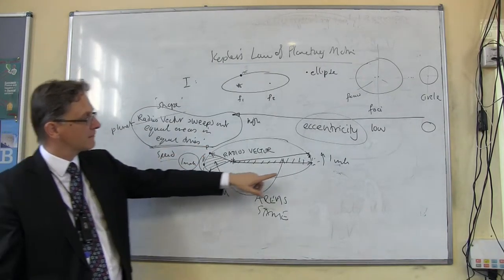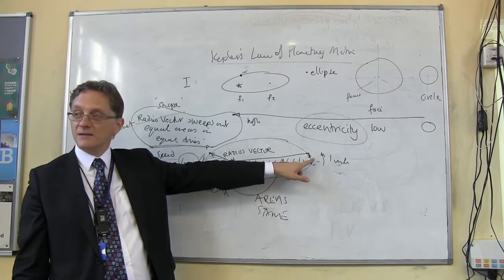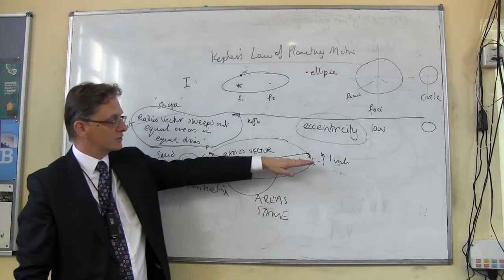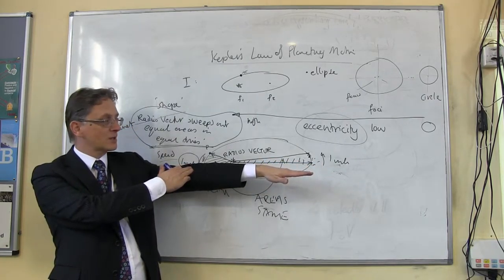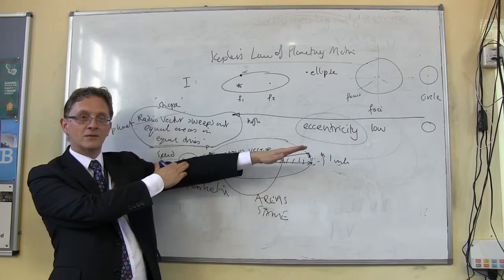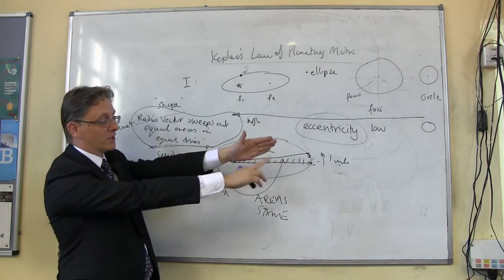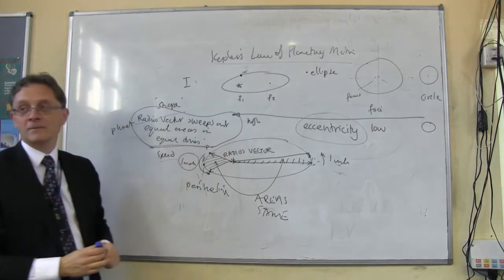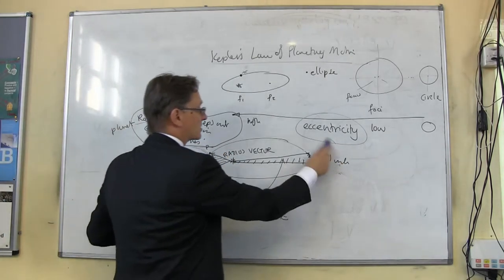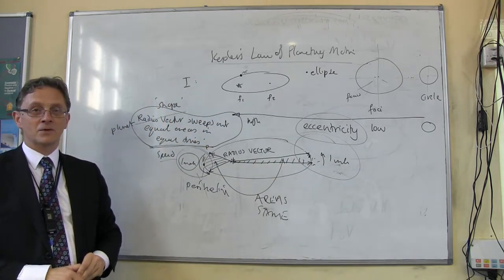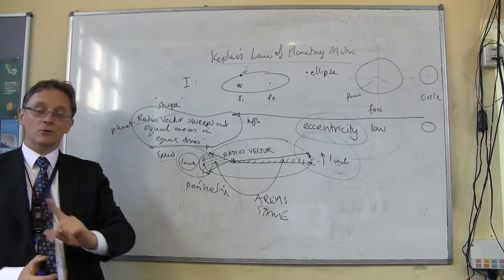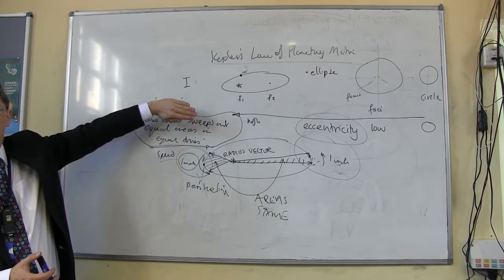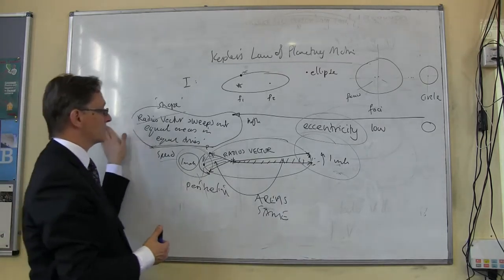If the planet moves from here to there in one month, and from there to there in another month, those two areas will be the same size. When it's out far, the radius vector is very long so the planet must move slowly — every degree it turns covers loads of area. Down close, the paintbrush is very short so the planet moves quickly. This idea of quick and slow motion eventually led into Newton's law of gravity. It's the radius vector of the planet that sweeps out equal areas in equal times.